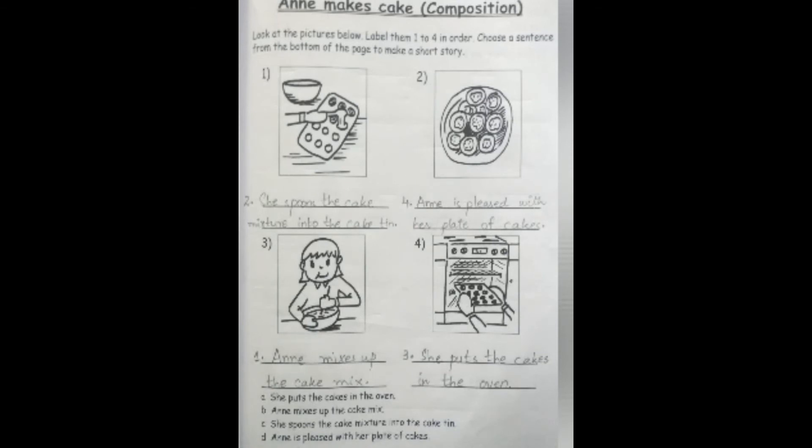A: She puts the cakes in the oven. B: Ann mixes up the cake mix. C: She spoons the cake mixture into the cake tin. D: Ann is pleased with her plate of cake.